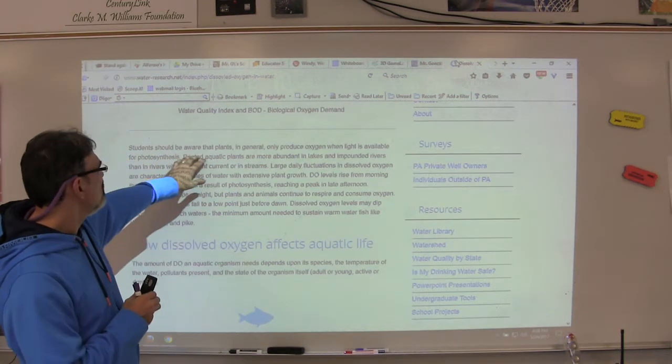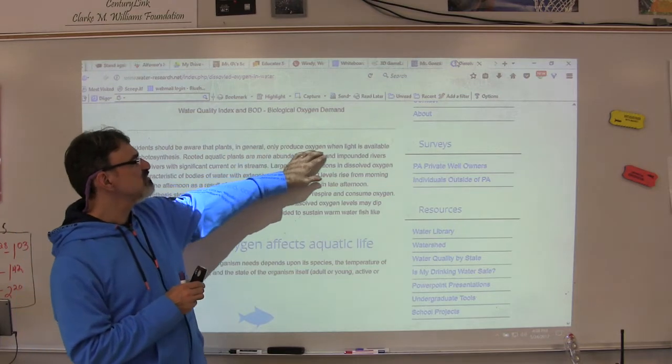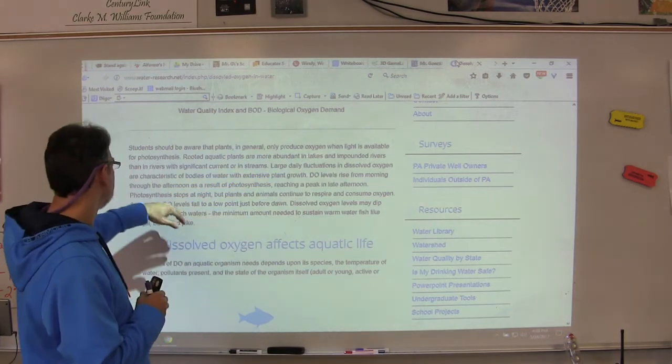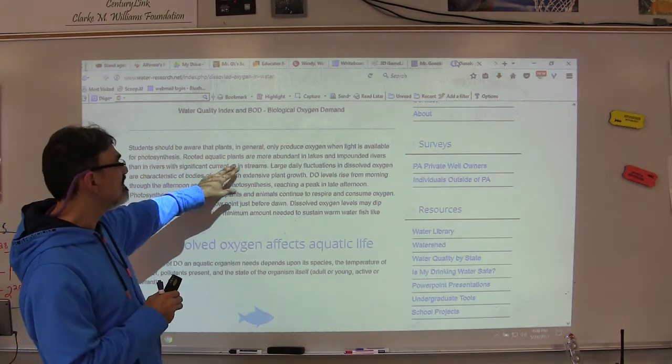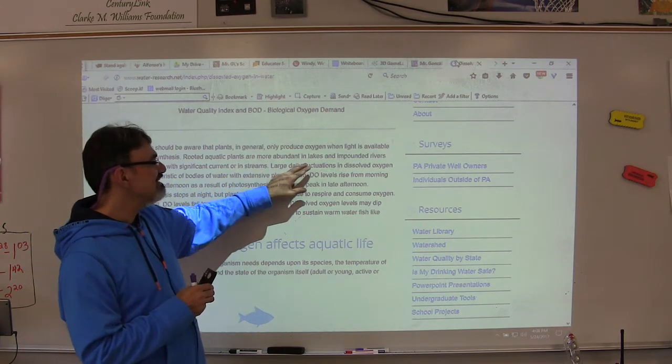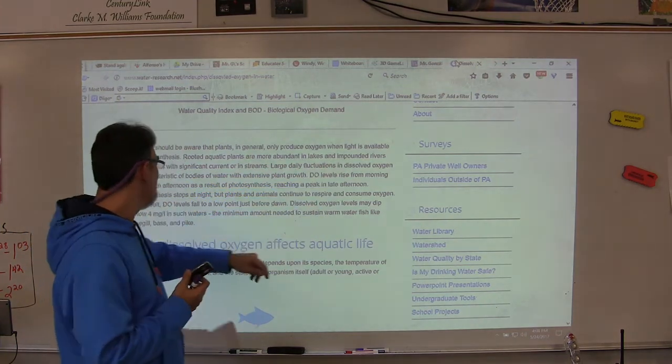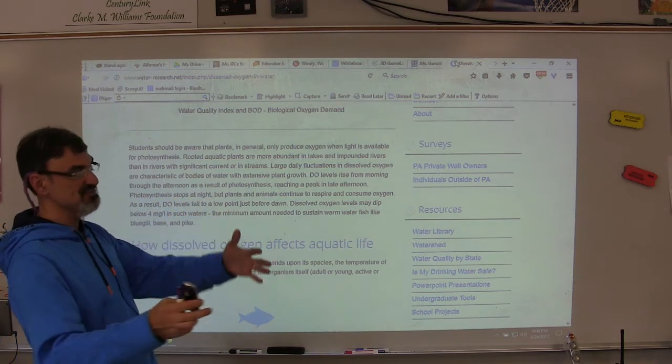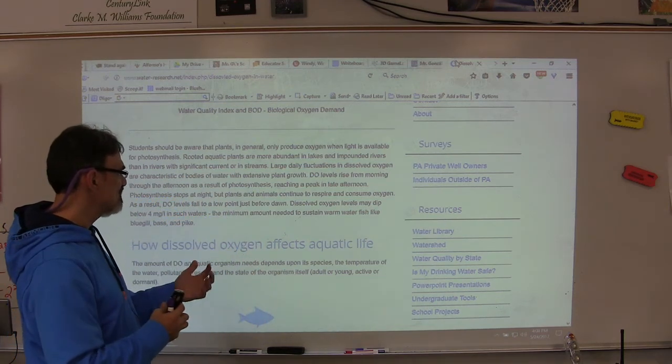It says here students should be aware that plants in general only produce oxygen when light is available for photosynthesis. Rooted aquatic plants are more abundant in lakes and in ponded rivers than in rivers with significant currents or in streams.